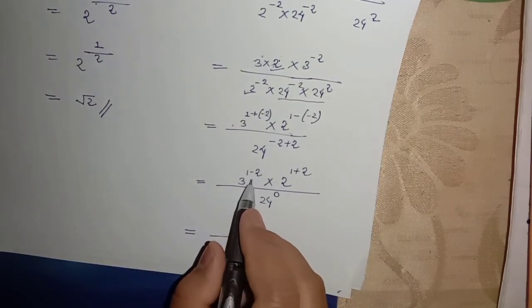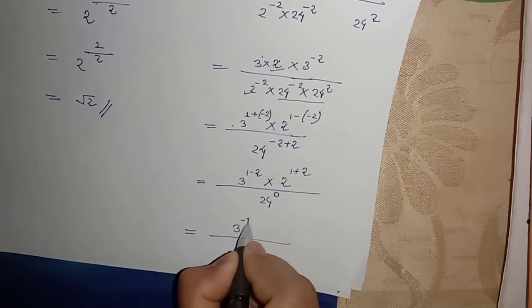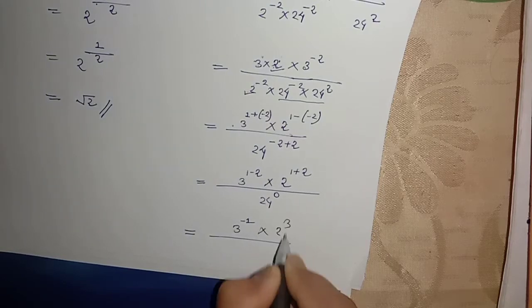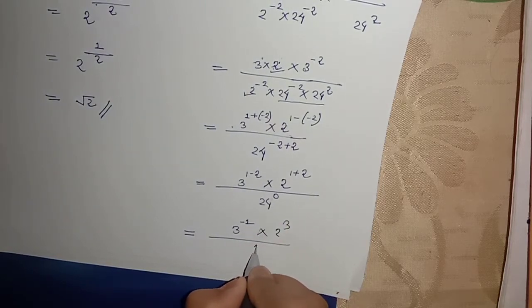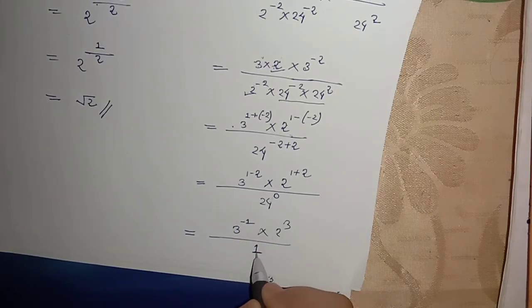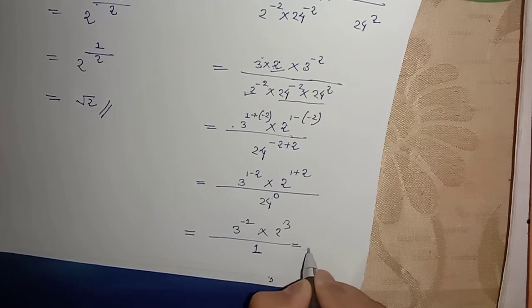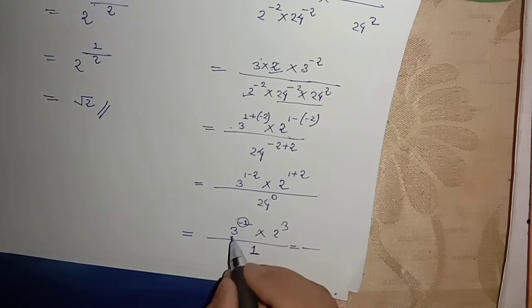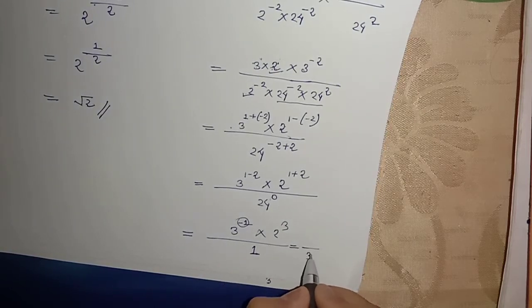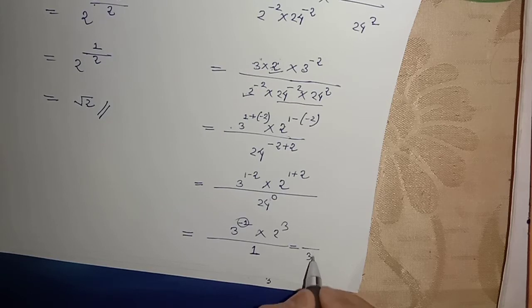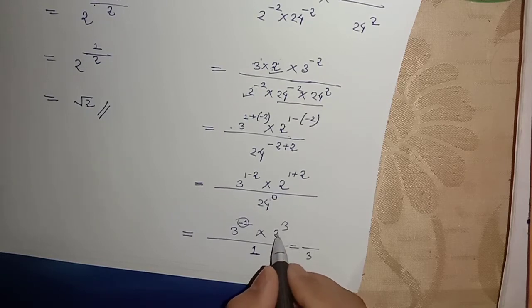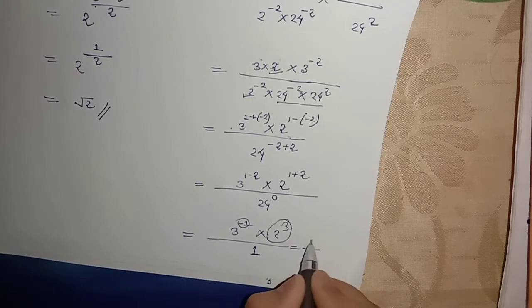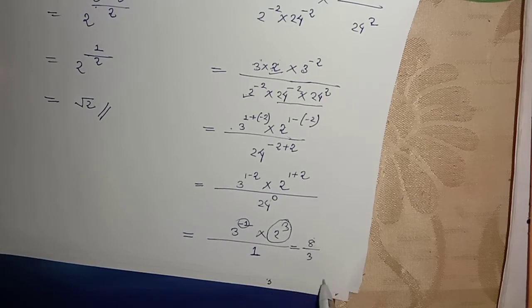3 to the power of minus 1 plus 1 plus 2 minus minus 1, minus 1 plus minus 2 is minus 1 by 2. And 2 to the power 1, so we are going to get 3 to 2 to 3, 8 upon 3.